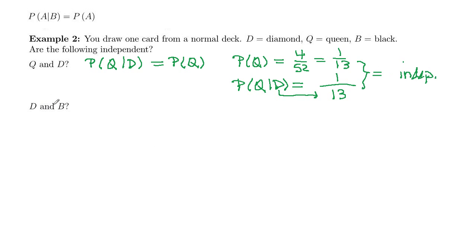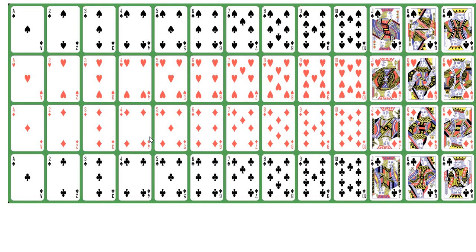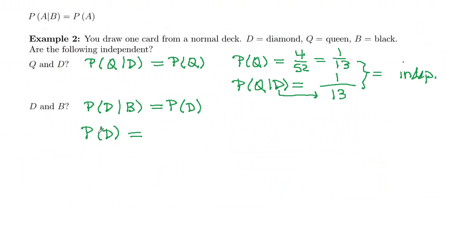How about diamond and black? So we want to ask, is the probability of a diamond, given that it's black, does that equal the probability of a diamond? Well, probability of a diamond. Go back to our deck of cards. So here's our diamonds. There are 13 of those, 13 of each suit, out of 52 total. So diamond is 13 out of 52, which is one-fourth.